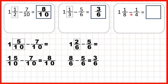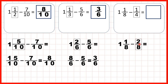We have 1 and 1 eighth, but we need to subtract 1 quarter. Again, we need the denominators to be the same, but this time we need to find a fraction equivalent to 1 quarter which has a denominator of 8. Remember, when we find equivalent fractions, we're looking to make the smaller denominators larger. So the 1 and 1 eighth stays the same, but instead of subtracting 1 quarter, we can subtract 2 eighths, because 4 times 2 is 8 and 1 times 2 is 2, so these fractions are equivalent.